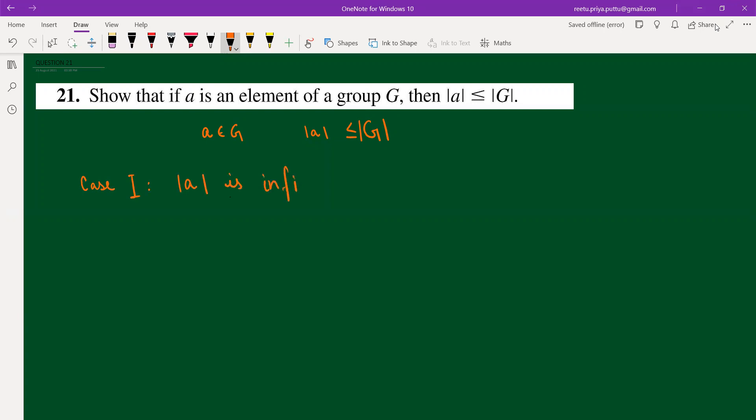So what happens when order of A is infinite? Then from here, we can say that e, a, a², and aⁿ, and so on, all are distinct. Why? Why can we say this?